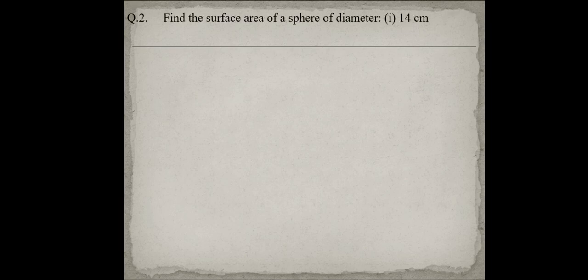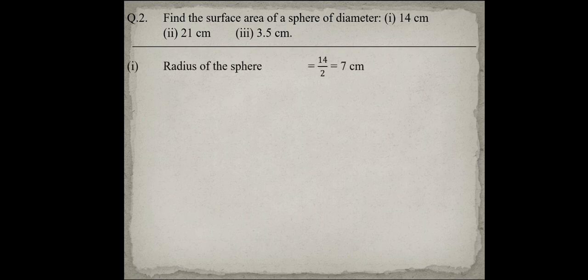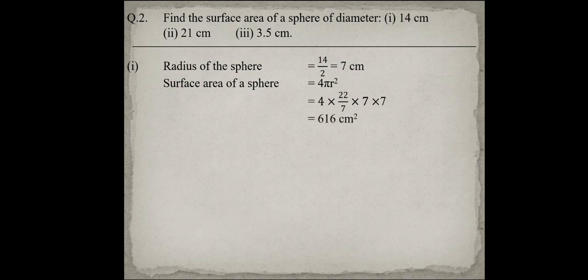In question number 2, find the surface area of a sphere of diameter 14 cm, second part 21 cm, and third part 3.5 cm. In the previous question, radius was directly given, but here diameter is given — the radius is half of the diameter. For the first part, radius is 14 upon 2 = 7 cm. So 4 into 22 upon 7 into 7 into 7 equals 616 cm².